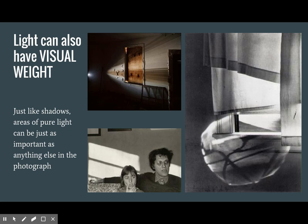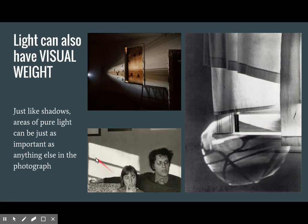Light can also have visual weight, not just shadows. So if we see these beams of light on the background here — I think there must be some kind of a glass vase or something where this light is going through and being modified — or even in this picture, which is a very odd picture of these two people, it's a photo by Gary Winogrand. Having these blazes of light on the wall behind them helps lead our eye to their faces. This light on the walls can be just as important as any other object.